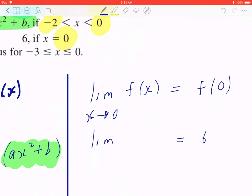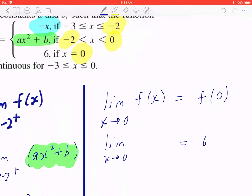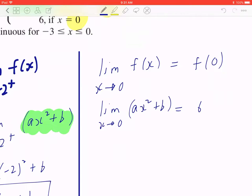And if you look at the left hand side, the limit as x is approaching 0 of ax square plus b. So now, you can plug in x to be 0, and when you collect like terms and you solve, b is going to be 6.